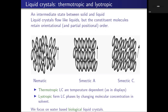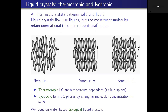Let me start with a quick reminder of liquid crystals. We know liquid crystals are intermediate between solid and liquid — they flow like liquids, but the constituent molecules retain orientational and perhaps partial positional order. The very well-known nematic has a director field N, this average molecular orientation. There is a distinction between thermotropics, which are temperature-dependent and transition according to temperature as in display devices, and lyotropics, which form liquid crystal phases by changing the molecular concentration in a solvent. We focus on water-based, lyotropic phases called biological liquid crystals, which are chromonic.